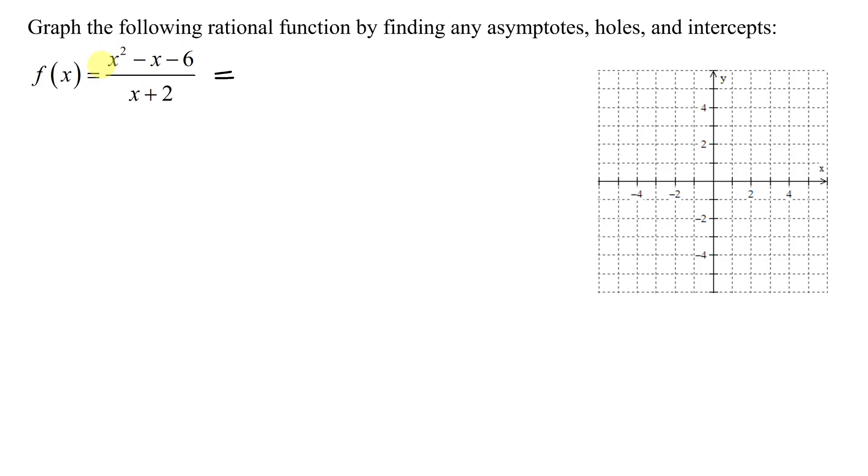I have a trinomial in the numerator, and I think it will factor. It's a simple one. The leading coefficient of the x squared is a 1, so that means I'm just going to have an x and an x. Two numbers multiply to a negative, they have to have opposite signs, so one has to have a plus, one has to have a minus. And I'm looking for two numbers that multiply to negative 6 and add to negative 1. Those two numbers are negative 3 and positive 2. You can double check by foiling out the numerator, and you will get x squared minus x minus 6.